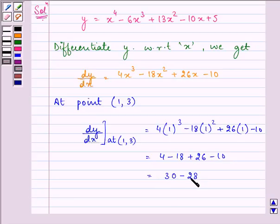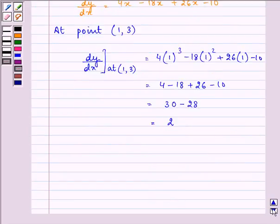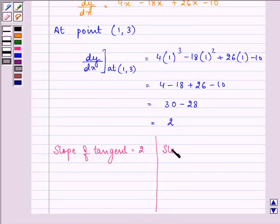That is equal to 2. So that means slope of tangent is 2, and slope of normal will be minus 1 upon dy/dx, that is minus 1 upon 2. So now since we have slope of both tangent and normal, we can find the equation of both of them.